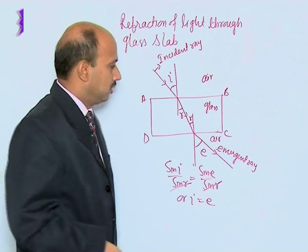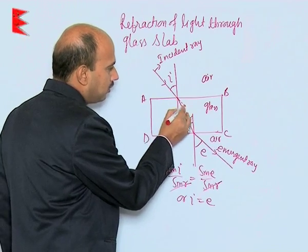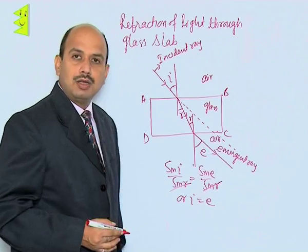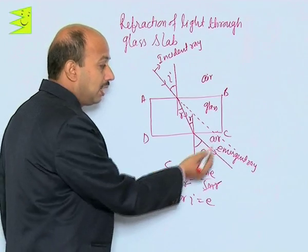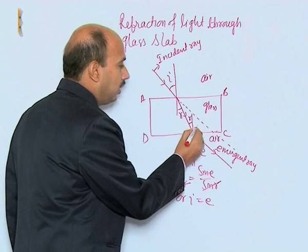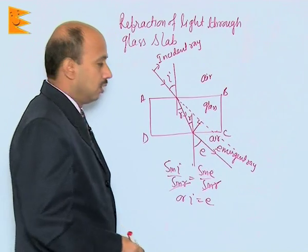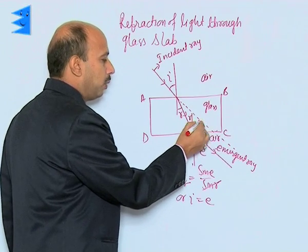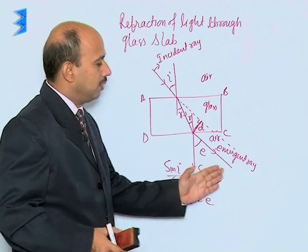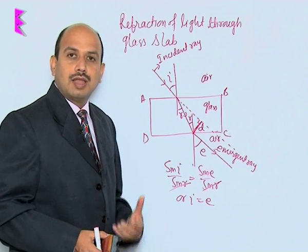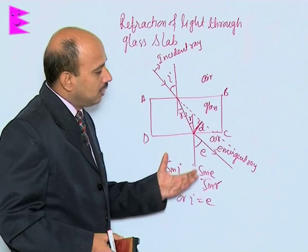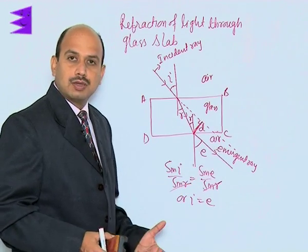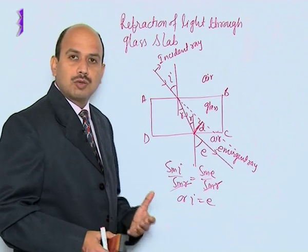So there is no angular deviation. But when we extend the incident ray, we find that the incident ray produced and the emergent ray are parallel to each other — however, they are laterally displaced. The perpendicular distance between these two rays is known as lateral displacement. So in a glass slab, there is no angular deviation of rays, but there is lateral displacement. Also, we do not get a spectrum in the case of a glass slab.